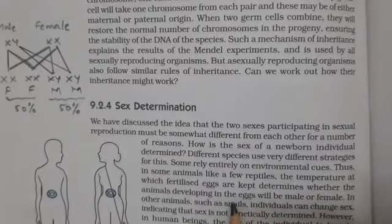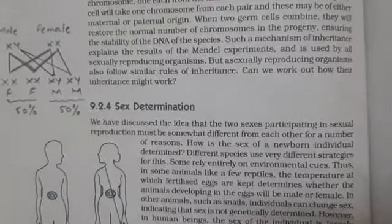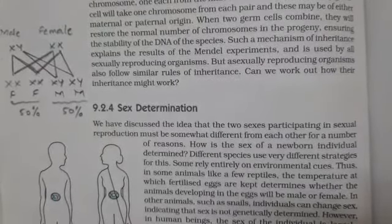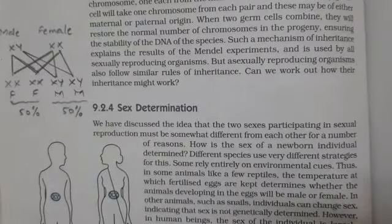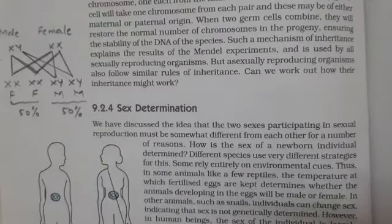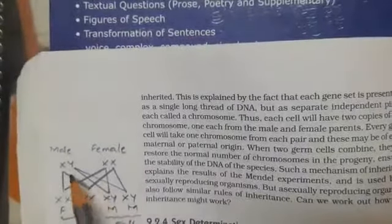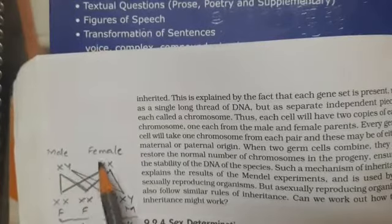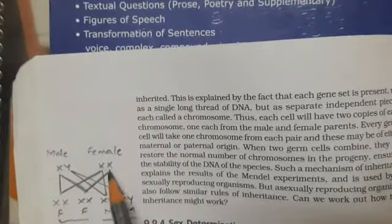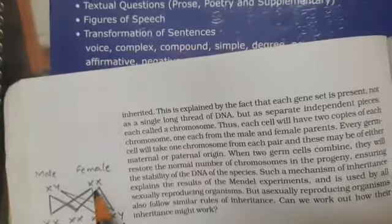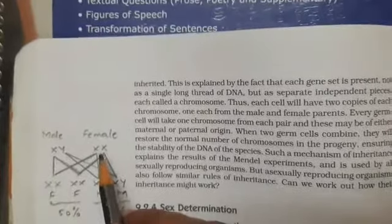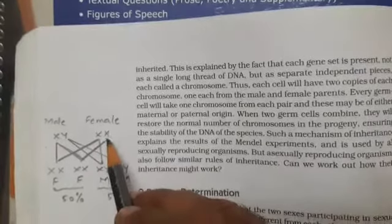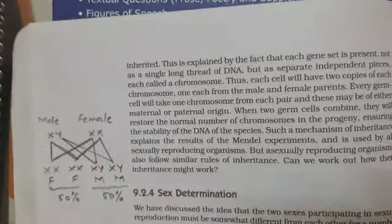The male donates sperms which are of two types — that can be an X chromosome or a Y chromosome from the male side. On the female side, they are both X chromosomes. So the male can donate either an X chromosome or a Y chromosome, but the female has only X chromosomes to donate. Each individual ovum will carry an X chromosome.